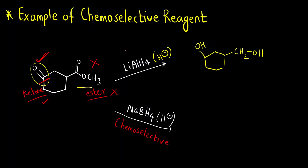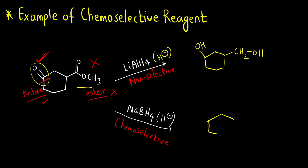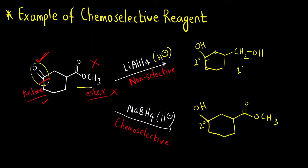And what about LiAlH4? It reduces both the functional groups, so we can call this a non-selective reagent — it is not a selective reagent, it reacts with both the functional groups. So here what is going to be the product? The ester group will not be reduced and the ketone will be reduced to secondary alcohol. This carbon is attached to two other carbons, so this is a secondary alcohol, and this is a primary alcohol. So this was an example of a chemoselective reagent.